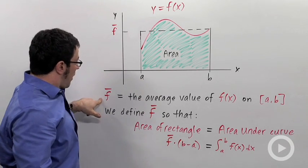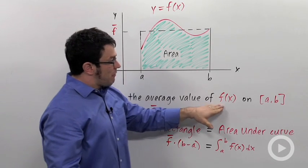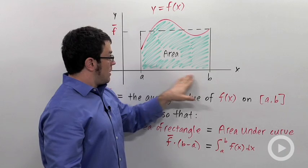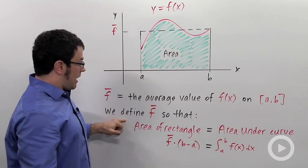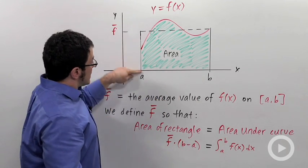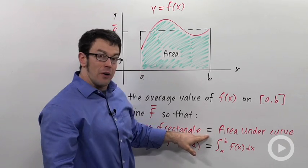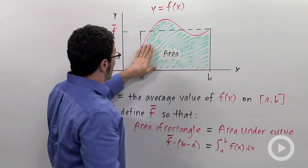So we call f bar the average value of f of x on the interval a b. And we define f bar so that the area of this rectangle is exactly equal to the area under the curve, this green area here.